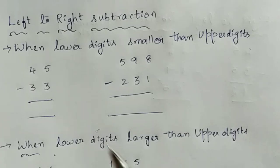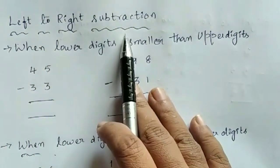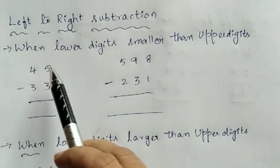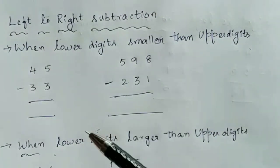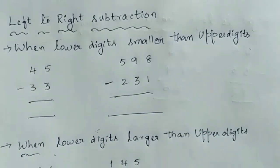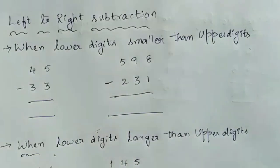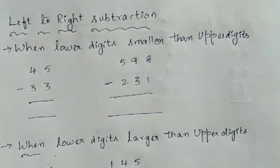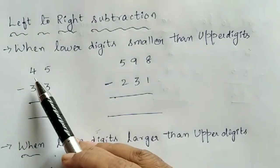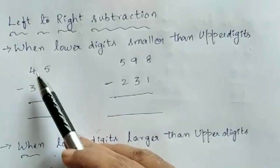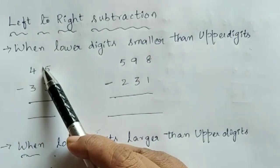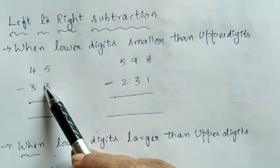Now left-to-right subtraction — this is different from normal subtraction. First you have to understand the process of how to do it from left to right. When lower digits are smaller than upper digits, take the examples 45 minus 33, and 598 minus 231. In both cases, lower digits are smaller than upper digits. Now we will see the first example: 4 minus 3 is 1 — don't write 1 in the answer yet.